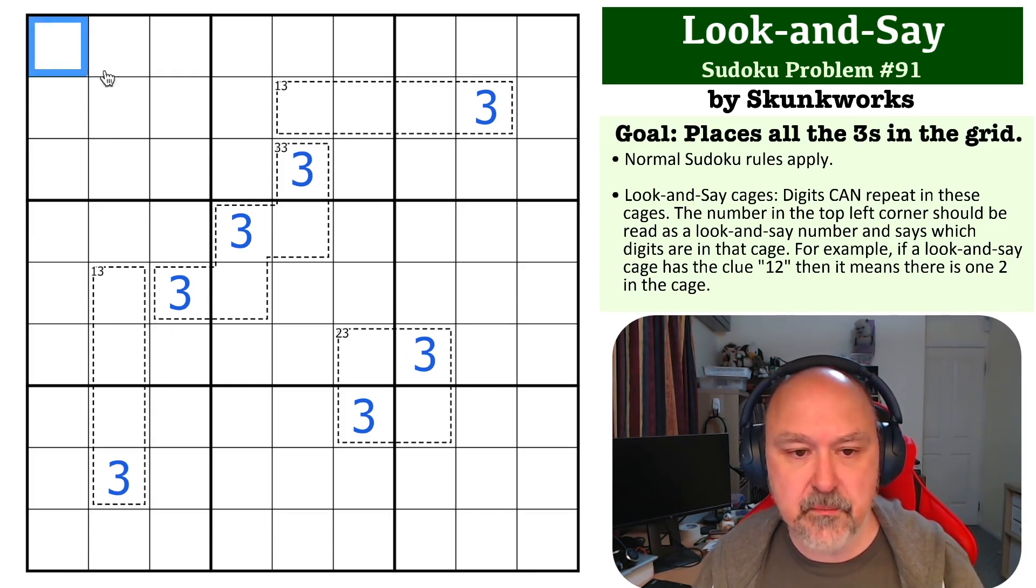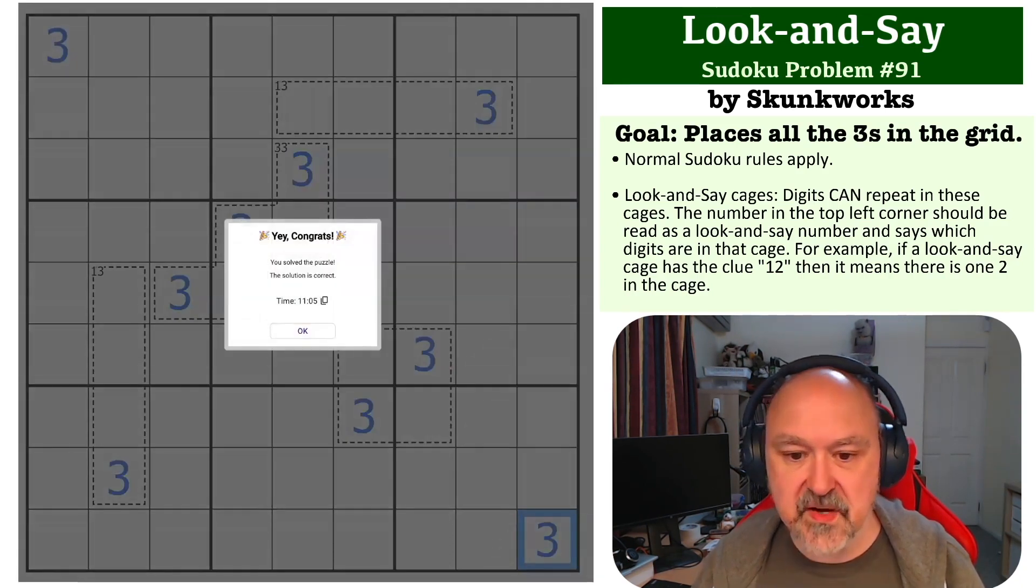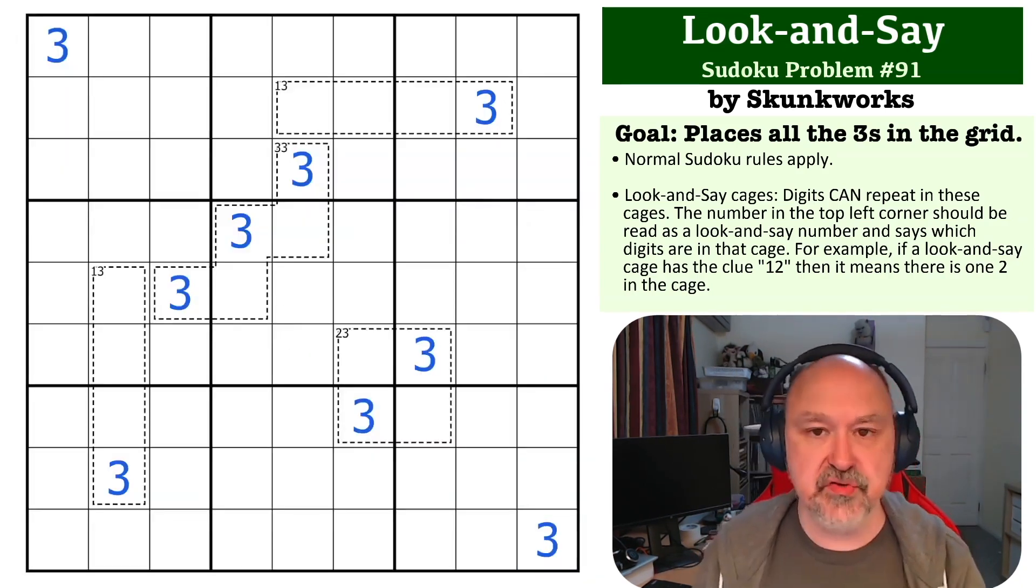In this box sees four 3s, so this becomes a 3. This box sees four 3s, so this becomes the 3, and that is the solution to the problem.